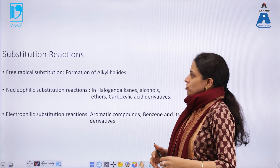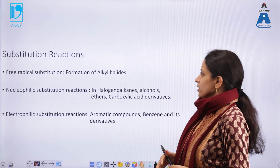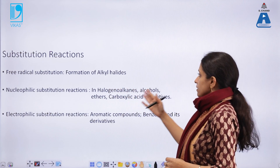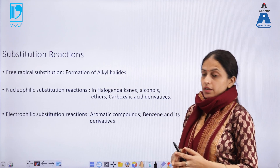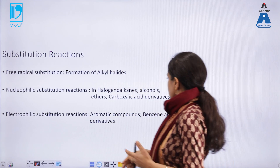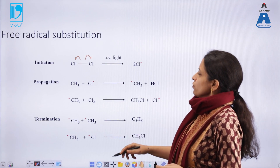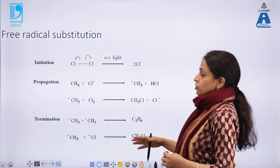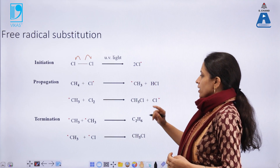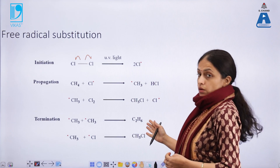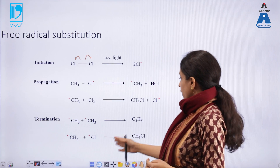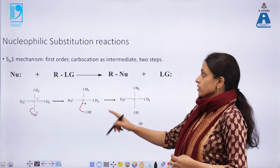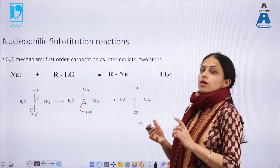Now let's look at substitution reactions. Substitution reactions can be free radical, nucleophilic, or electrophilic. Free radical substitutions usually occur in the formation of alkyl halides; nucleophilic substitutions occur in alkyl halides, alcohols, ethers, carboxylic acid derivatives; and electrophilic substitutions happen in aromatic compounds and their derivatives. Free radical substitution follows a mechanism with three steps — initiation, propagation, and termination — which involves the formation of an alkyl free radical combining with each other or with a halide free radical to give the required product, which is an alkyl halide. Free radical reactions usually occur in the presence of light or heat.